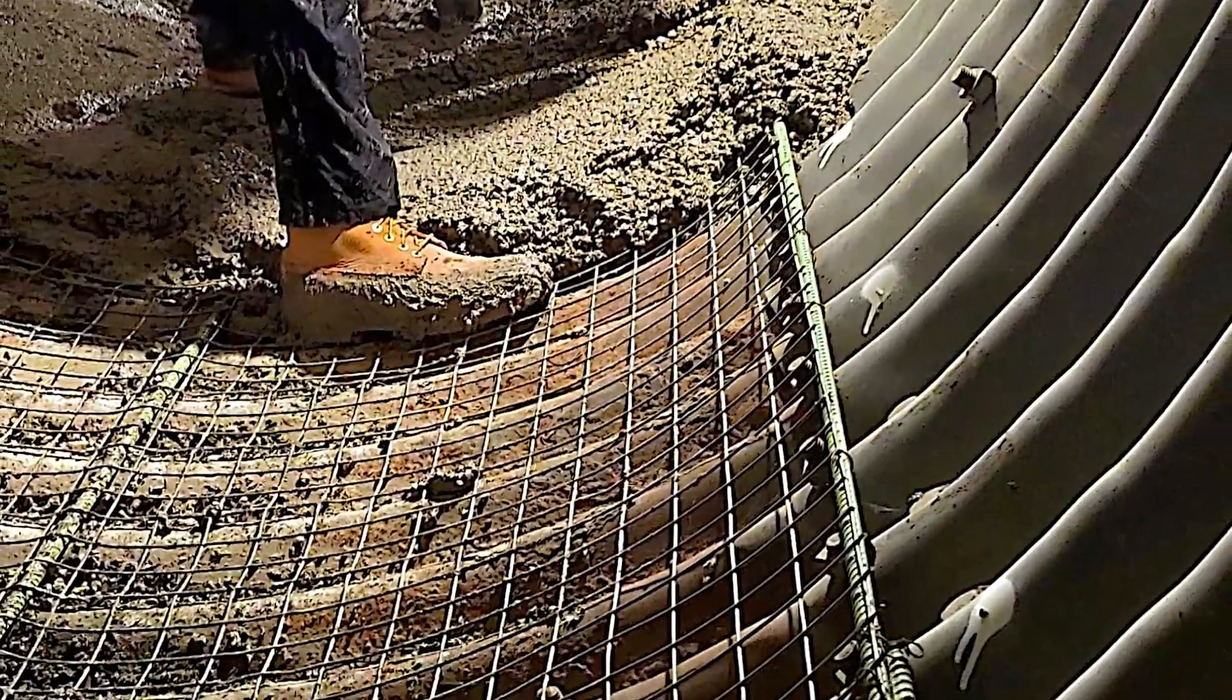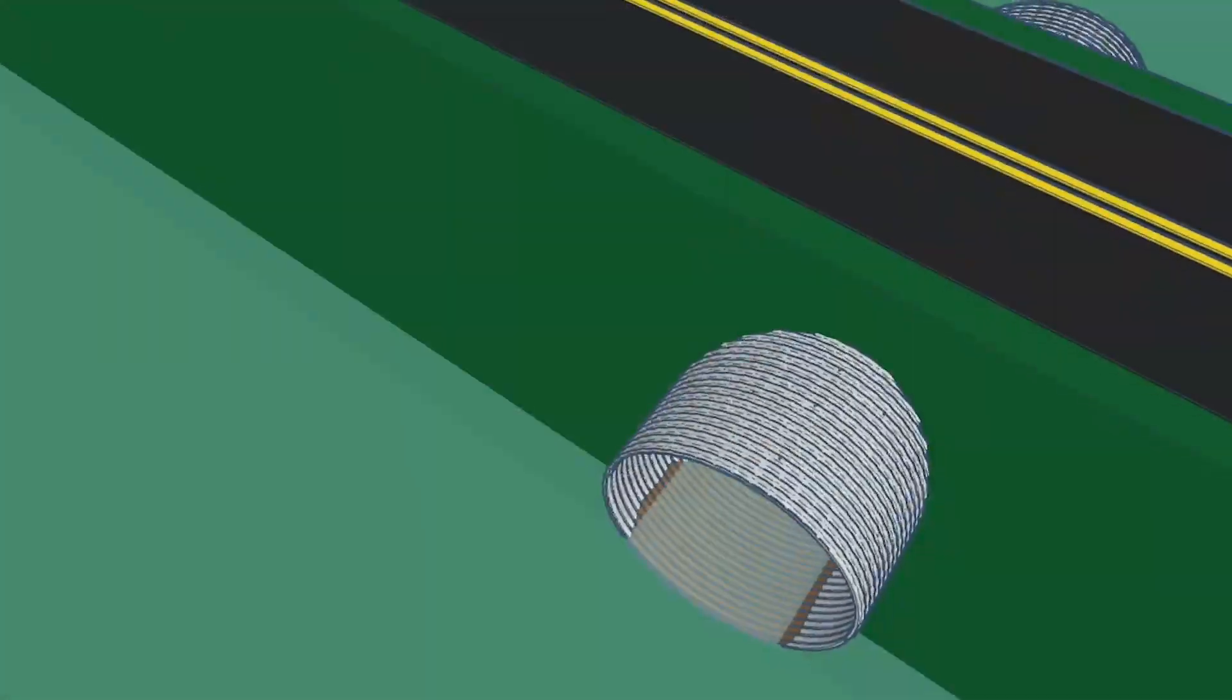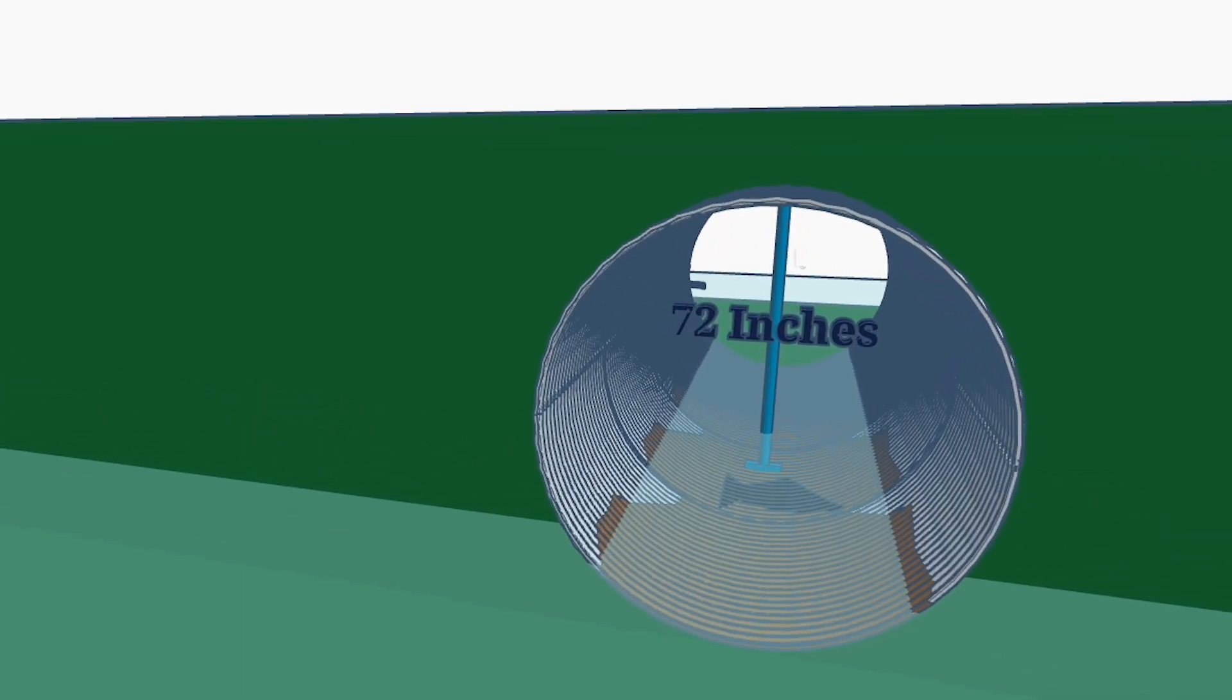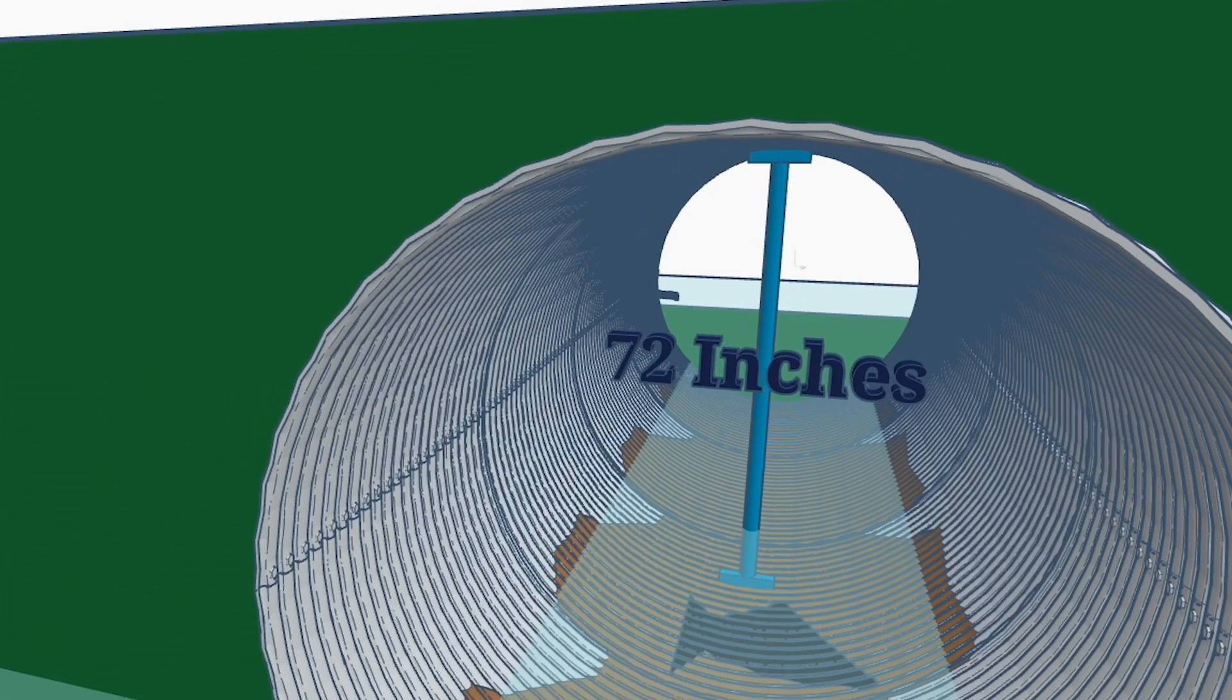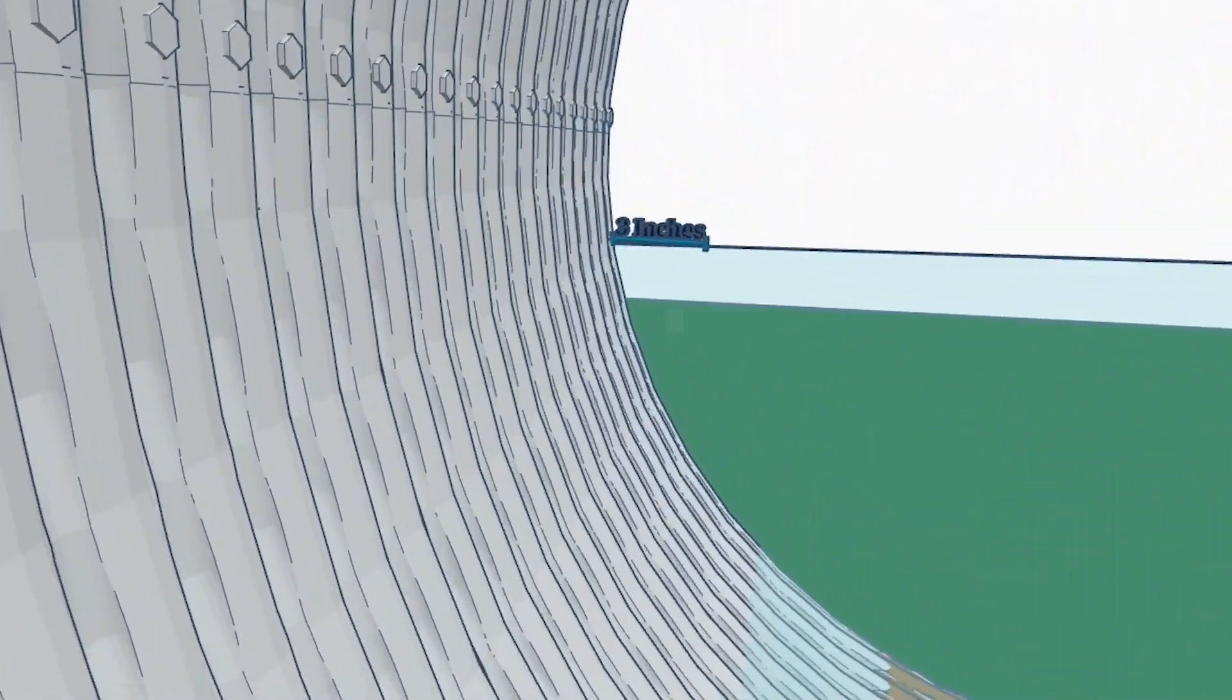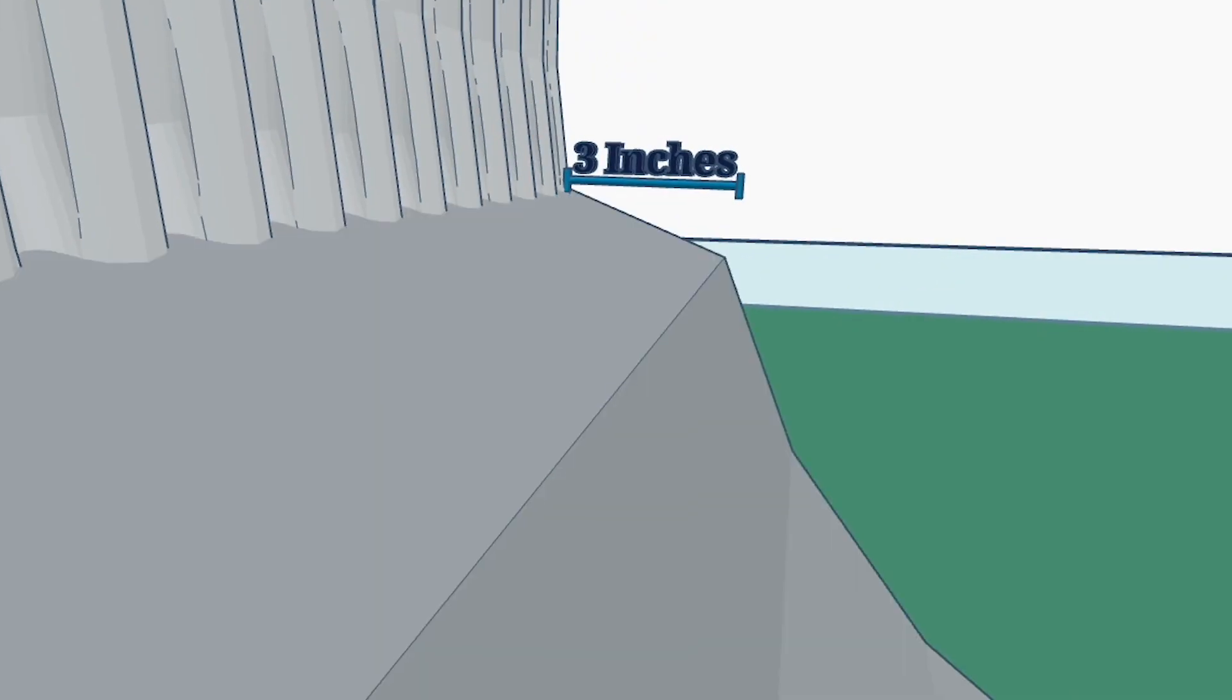On our most recent job we paved a 72 inch corrugated pipe. We actually paved 316 feet of it. In fact, to avoid creating a shelf where water can stay stagnant, we slope the edges directing the water down onto the invert.